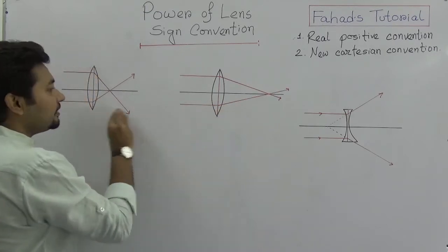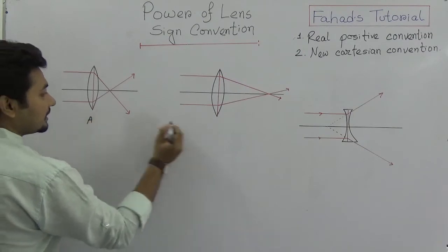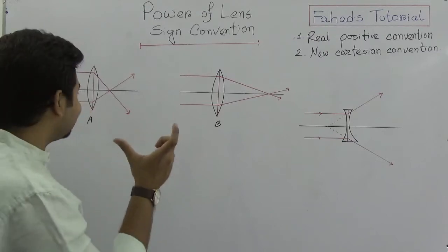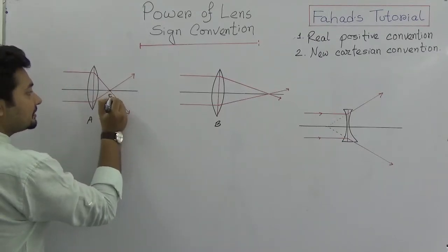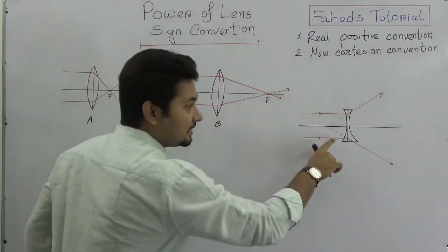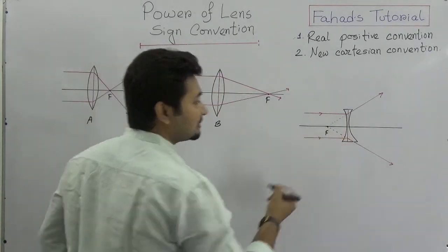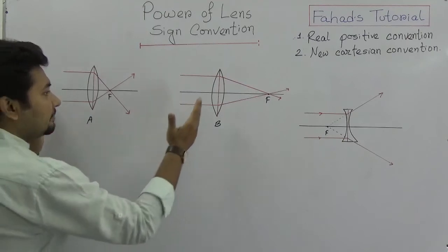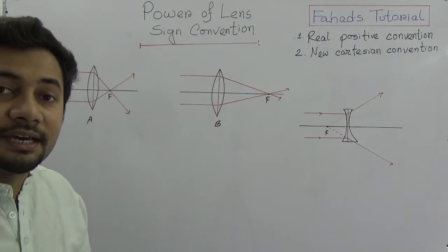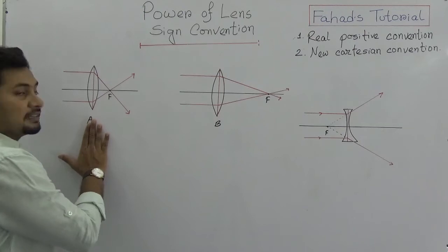If you see these two figures — Figure A and Figure B — and the question is which lens has more power, the answer should be lens A. This point and that point are both principal foci. In Figure A, there is a convex lens, and in Figure B also a convex lens.